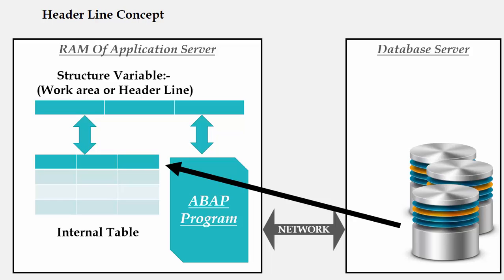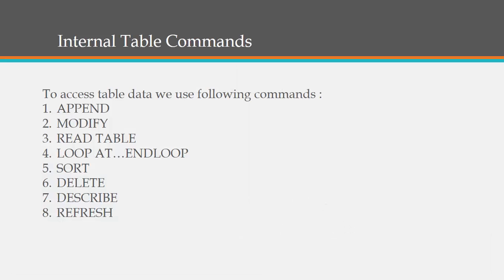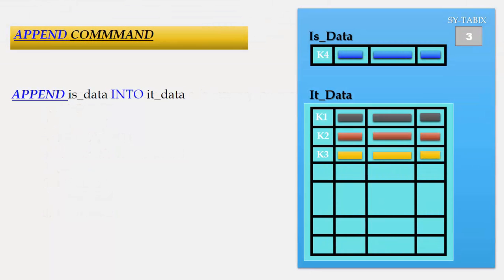To process any record in the database table or in the internal table one by one, a structure variable is required which holds the record to be processed — also known as the header line or work area. At a time the processor works on only one record in the work area. We will see how the record is moved from the internal table to the structure variable. To access data from the internal table we use eight commands: append, modify, read table, loop at, sort, delete, describe, and refresh.